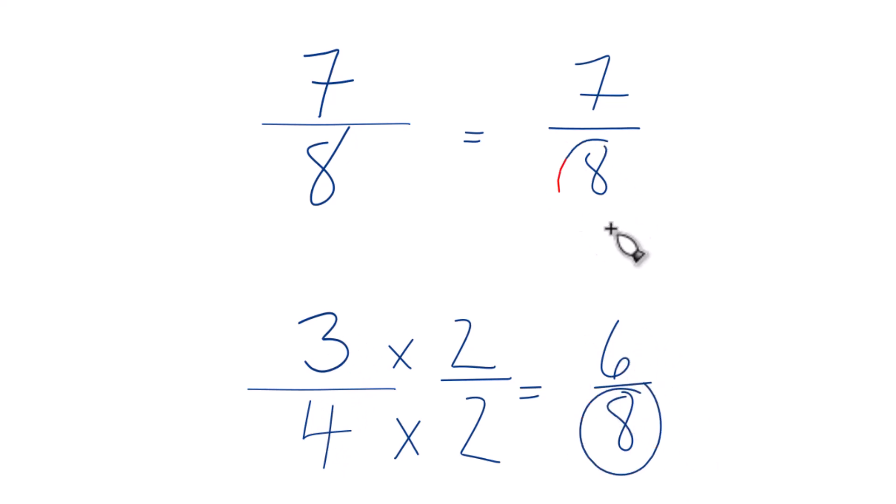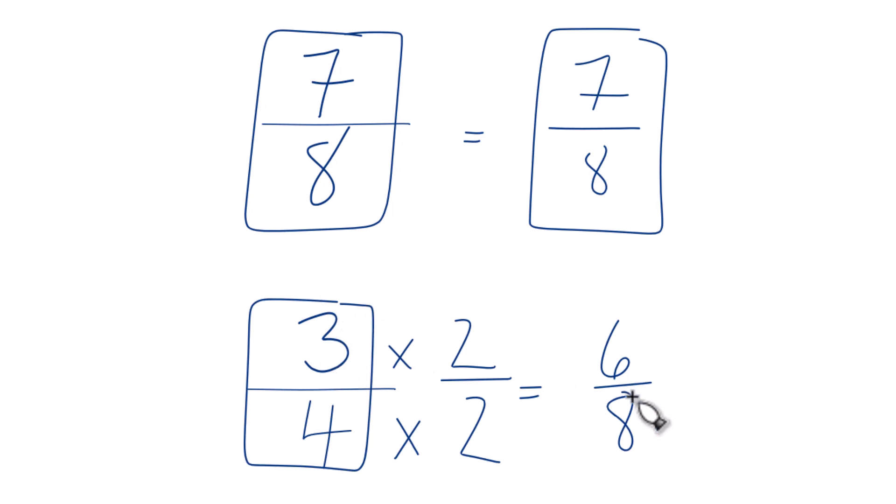Now we have the same denominator. If we compare the numerators, 7 is greater than 6. Because of that, 7 eighths is greater than 6 eighths. And 7 eighths is also greater than 3 fourths, since 3 fourths and 6 eighths are the same thing.